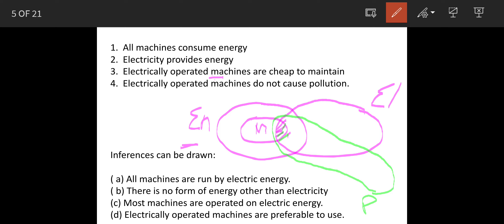So now we will see the inferences. All machines are run by electrical energy - no. Because if you see the statement here, as per this, electricity is providing part of energy. So all machines require energy but all machines are not running on electrical energy.